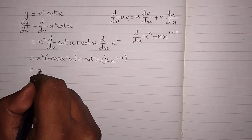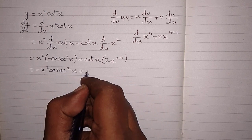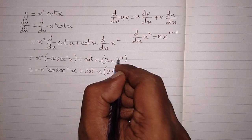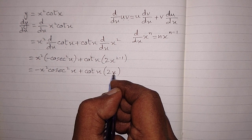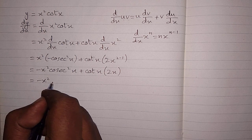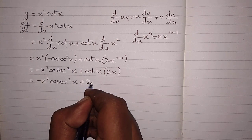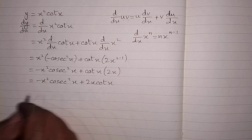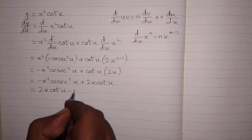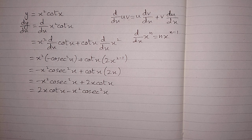This gives us −x²·csc²(x) plus cot(x) multiplied by 2x, because x^(2−1) = x¹ = x. So we have −x²·csc²(x) + 2x·cot(x), which can be written as 2x·cot(x) − x²·csc²(x), and this is the required answer.